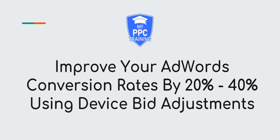What's up guys, Rob from My PPC Training, and in today's video I'm going to show you a cool tactic that we use to increase conversion rates by anywhere from 20 to 40% using just device bids alone. This works in any campaign, in any industry — it doesn't matter. With that said, let's dive right in.